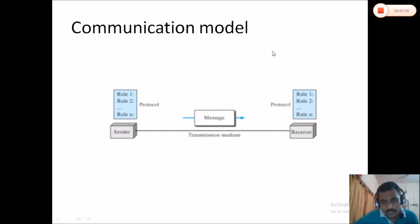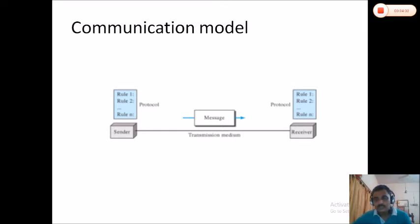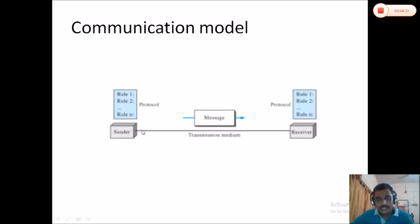The data sent by the sender should be accepted by someone, which is called a receiver. The receiver is a device to which the data is transmitted. What is transmitted between the sender and receiver is called a message — the original data being transmitted. To transmit data from the sender to the receiver, there should be a path through which the data flows, called the transmission medium. Both the sender and receiver should obey some set of rules called protocols.